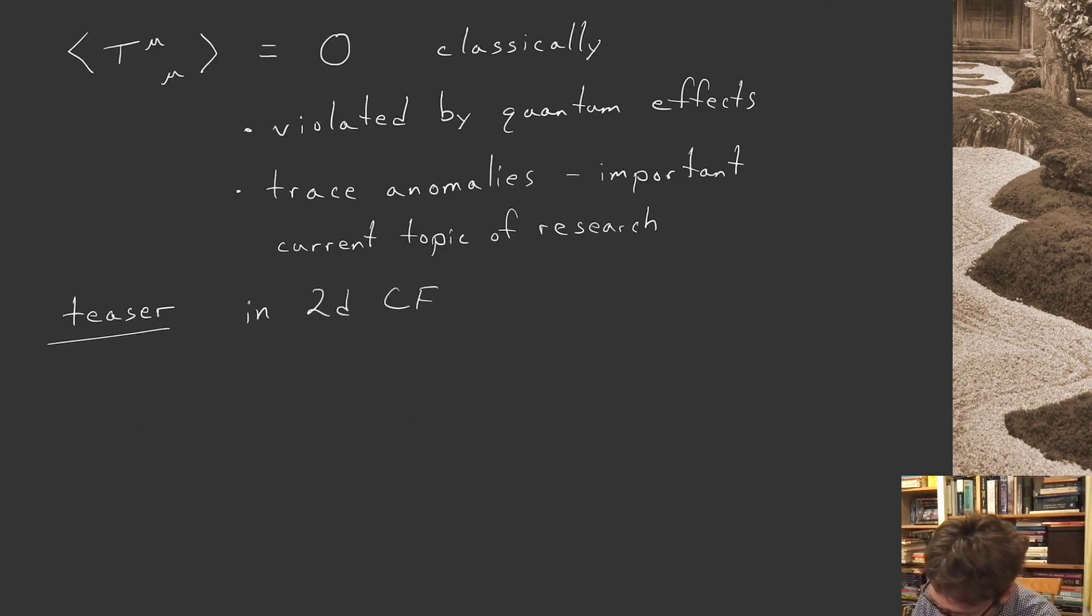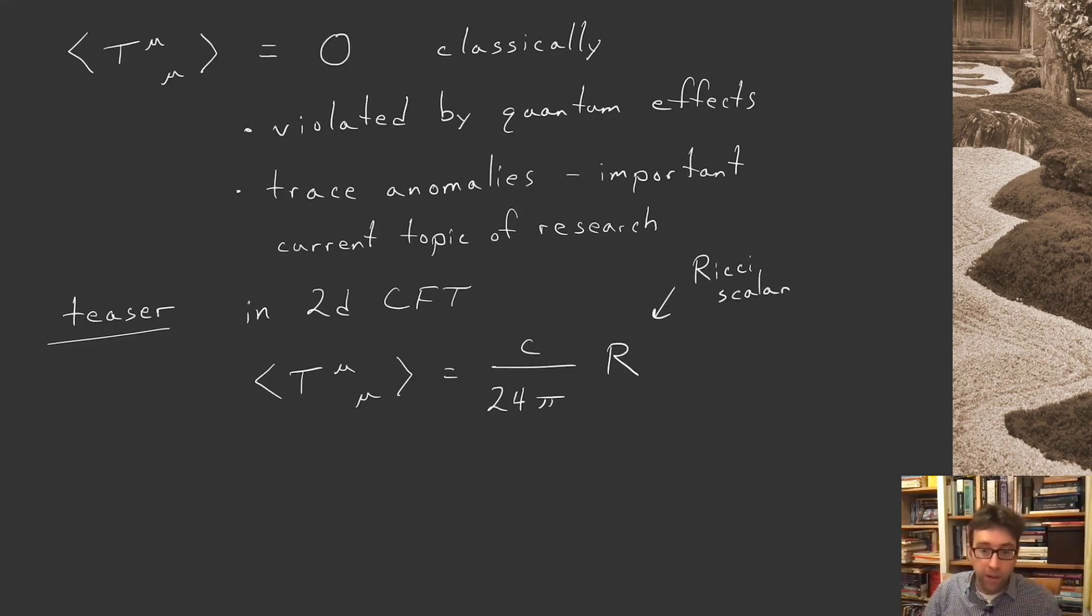Let me give you a teaser. In 2D CFT, there's a famous result that the trace of the stress tensor equals c/(24π) times R, the Ricci scalar curvature. In flat space this trace vanishes, but if you put your conformal field theory on a sphere where the Ricci scalar curvature is constant, the trace has this constant value.